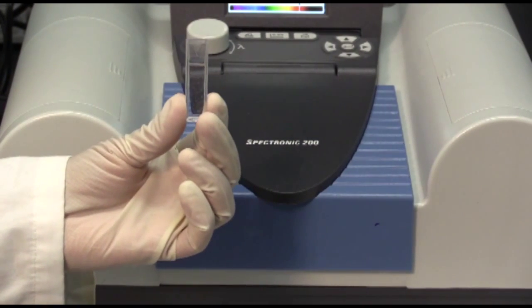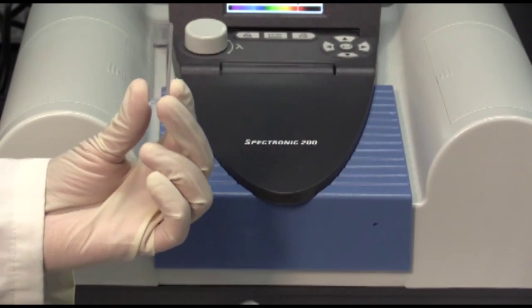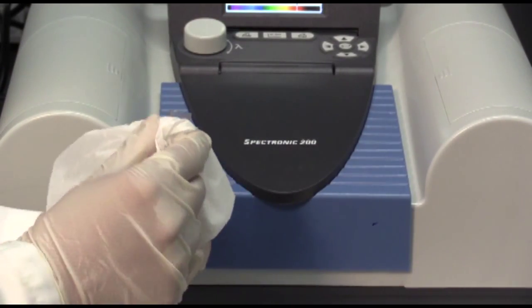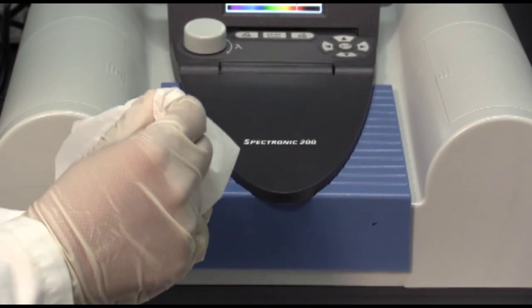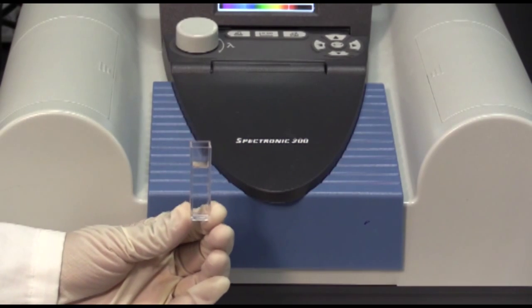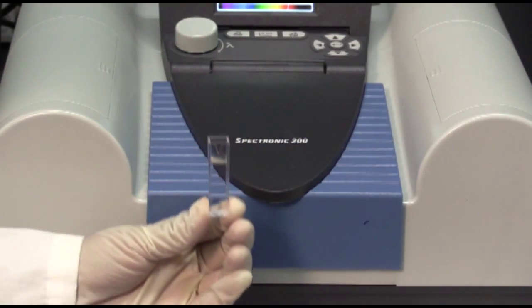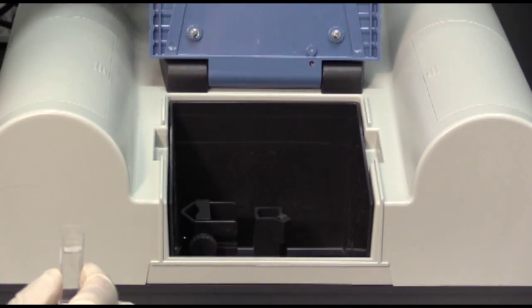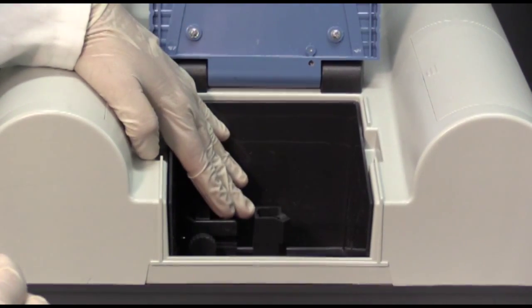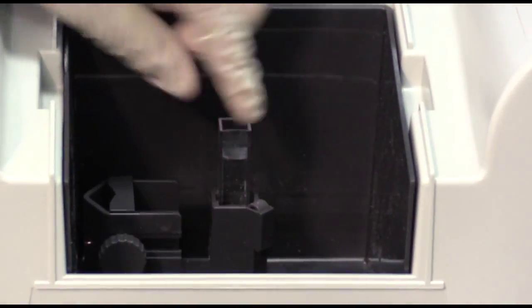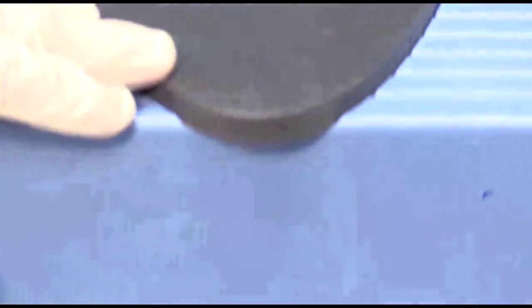Once you've understood which way is the clear sides, take a chem wipe and just wipe down the outsides to make sure there's no dust obstructing the clear windows of your cuvette, or this will affect your results. Once you are ready to put the cuvette into your instrument, just open the compartment. There will be a square holder for your square cuvette. Press your cuvette all the way down, and close the compartment.